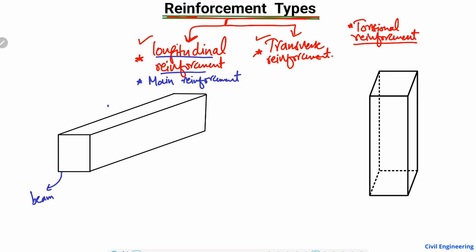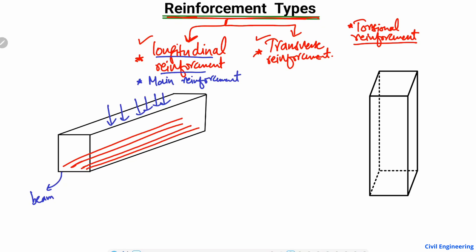The beam is always loaded vertically. In the case of the beam, this kind of reinforcement is provided horizontally along the axis of the beam. If I draw the cross-section of this beam, this reinforcement will be provided like this — for example, four bars are here.